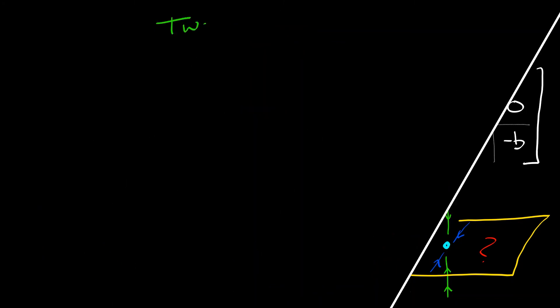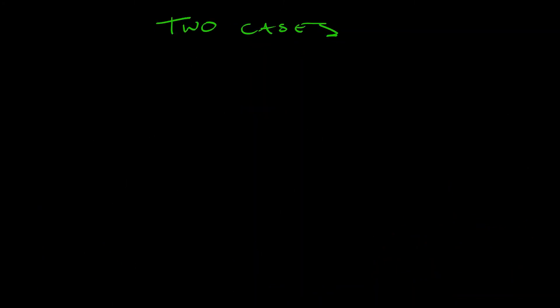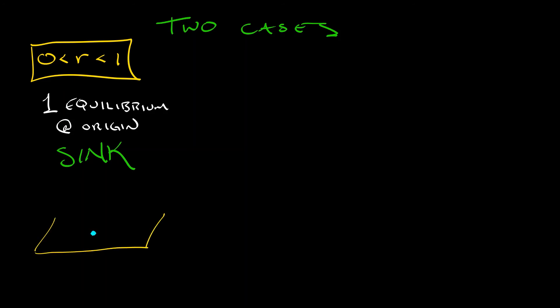It's now clear that we have two cases to deal with. The first is when r is sufficiently small between zero and one. This system has one equilibrium at the origin, and it's a sink. Because that trace is negative, determinant is positive. You could check that there are no complex eigenvalues there.